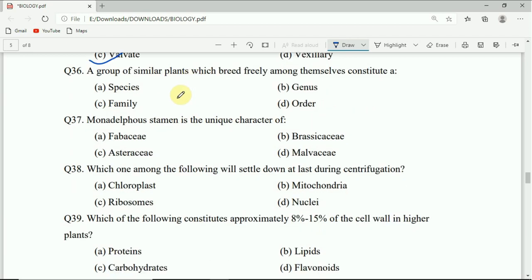Options are twisted, imbricate, valvate, or vexillary. Correct answer is valvate. Question 36: A group of similar plants which breed freely among themselves constitute a species, genus, family, or order. Correct answer is species.